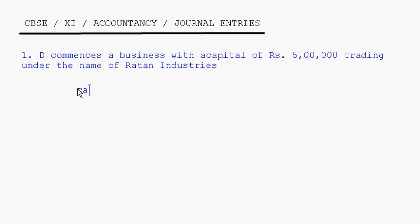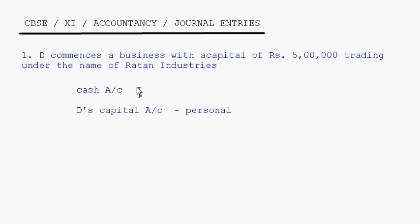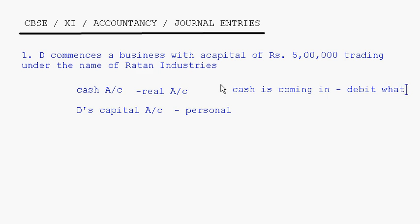Here the capital account is a personal account, and cash account is a real account. Cash is coming in, and the rule for real accounts is: debit what comes in, credit what goes out. So cash is coming in means cash will be debited.